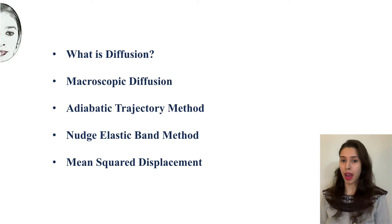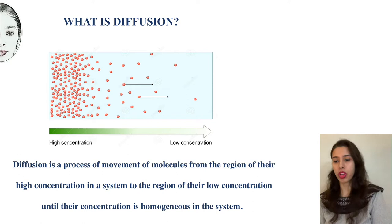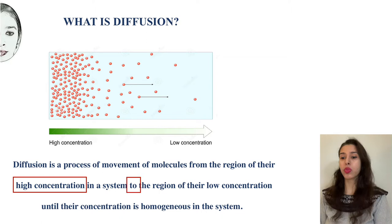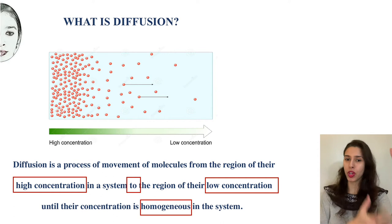What is diffusion? Diffusion is a process of movement of molecules from the region of their high concentration in the system to the region of their low concentration until their concentration is homogeneous in the system. What I mean by that is atoms, molecules, or particles always move from where they are high in concentration to where their concentration is low, until they are evenly distributed.